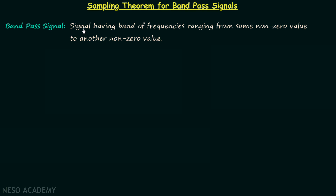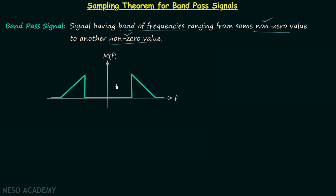A band-pass signal is a signal having a band of frequencies ranging from some non-zero value to another non-zero value. As you can see here, we have the spectrum of the message signal represented by M(F), and the band of frequencies ranges from some non-zero value to another non-zero value. F equals zero is not included in this band of frequencies.